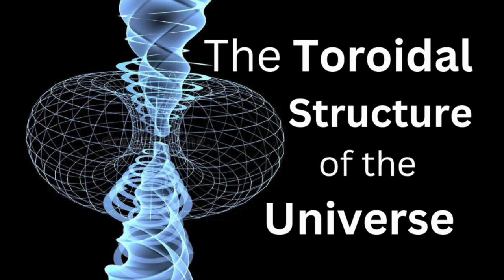And you mentioned this torus shape. From what I understand, the torus, which is like a donut. And then I've also heard there's the horn torus, which is like an apple where it has a dimple at the top and the bottom. And I've heard that the structure of our universe is more like a horn torus. Would you agree with that?